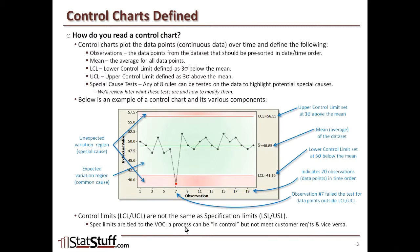You can have a process that's considered within control — within three standard deviations of the mean — but does not meet the customer's requirements. And vice versa. It's important to understand we're not saying the same thing when we talk about control limits compared to spec limits.